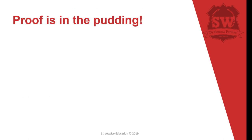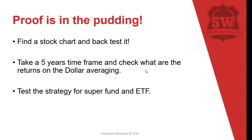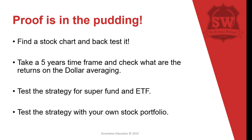The proof is in the pudding, as my mom used to say. What I want you to do is find a stock and do some back-testing. Take a five-year time frame and check out the return on dollar averaging. See if it works — if you keep buying as the market drops, do you actually get a better return? Also test the strategy on a super fund and ETF — that's exchange traded fund — and test it with your own stock portfolio. If the market is dropping and you average down, did you overall improve the return?